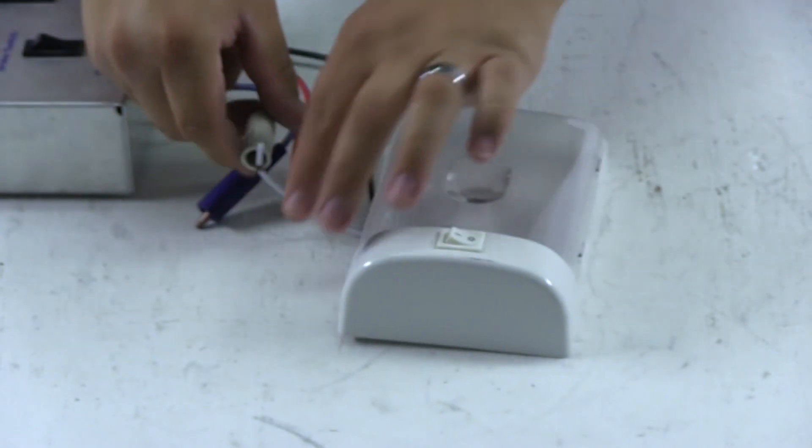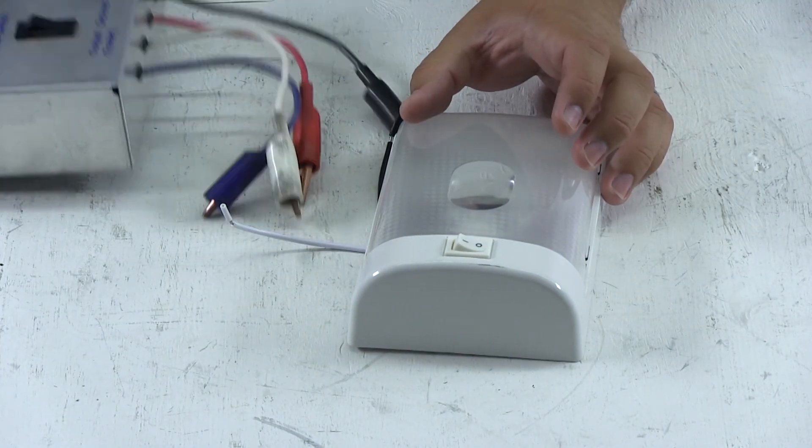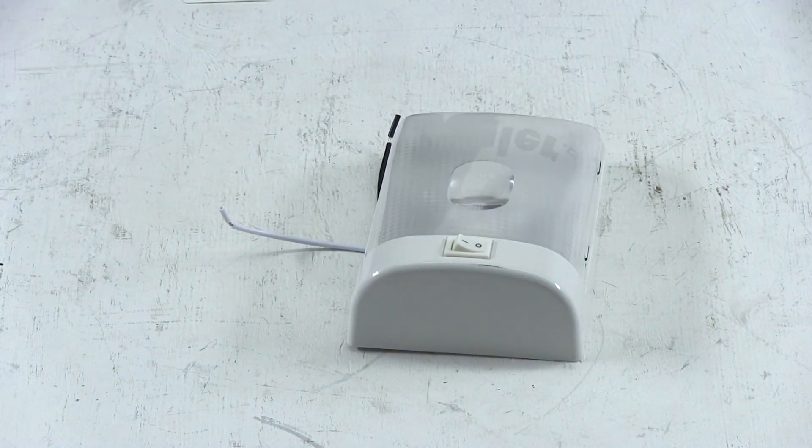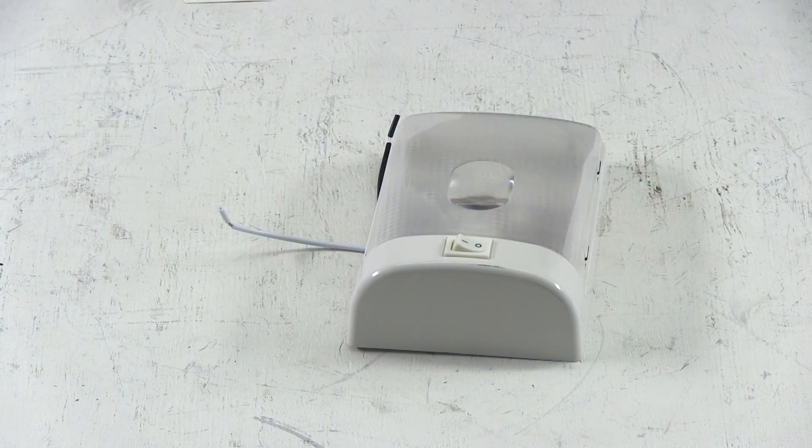And that does it for Optronix RV Eurostyle interior light, part number RVIL21.